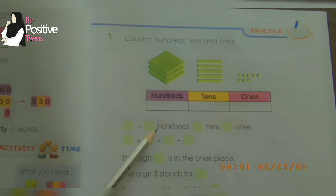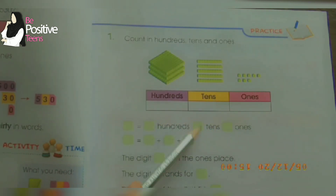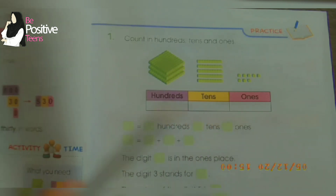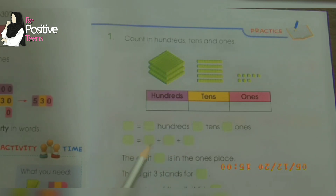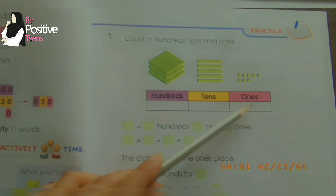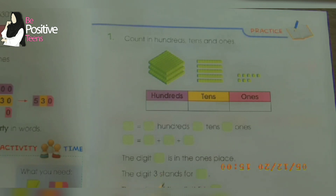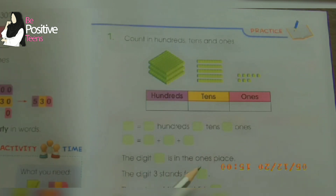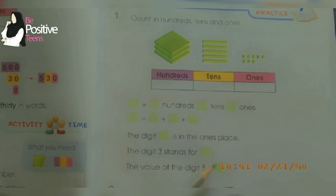So the number is 358. In the hundreds place we write three, in the tens place we write five, and in the ones place we write eight. So three, five, and eight — that is 358. We elaborate it further as three hundred plus fifty plus eight, which is 300 + 50 + 8. The digit three stands for hundreds, the value of digit five is fifty, and the digit eight is in the ones place.